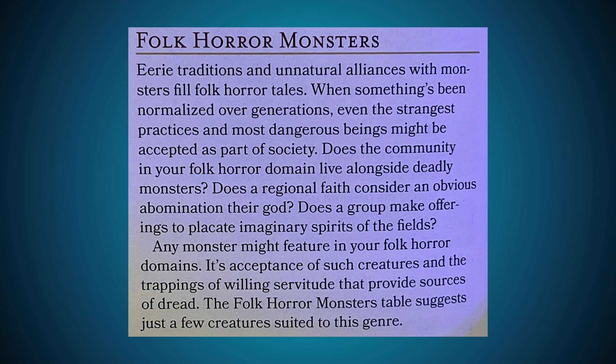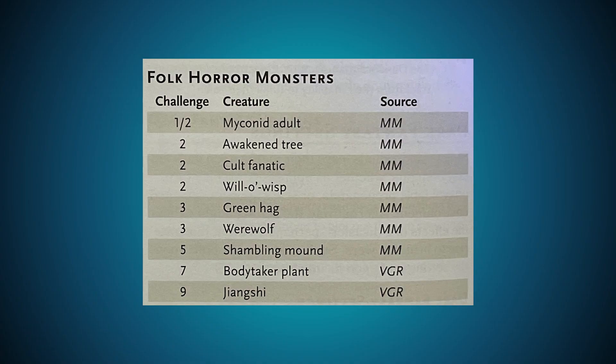The folk horror monster table suggests just a few creatures suited to this genre, sorted low CR to high CR. MM is Monster Manual, VGR is Van Richten's Guide to Ravenloft. The list includes: Myconid Adult, Awakened Tree, Cult Fanatic, Will-O-Wisp, Green Hag, Werewolf, Shambling Mound, Body Taker Plant, and Jingshi. A lot of those look like they have alternative appearances and might be able to blend in with regular stuff, so we get a lot of creep factor from that.